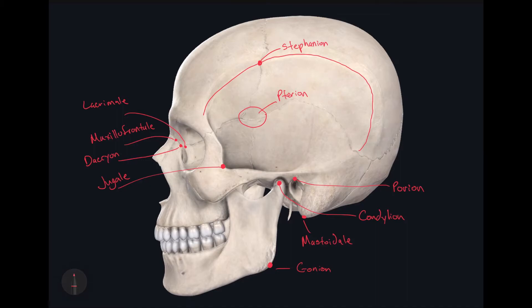The frontotemporale is a craniometric point located along the temporal line. It's found where the temporal line reaches the most anterior and medial point on the frontal bone — somewhere around here. Again, it's the most anterior and medial point on the frontal bone running along the temporal line.